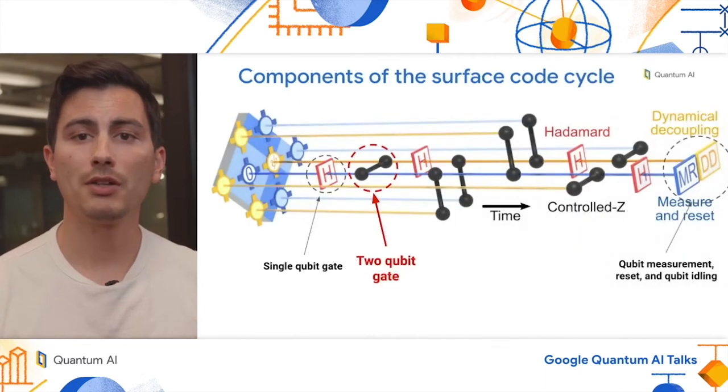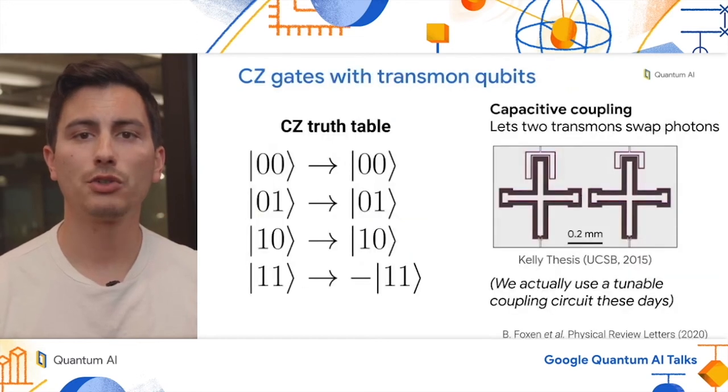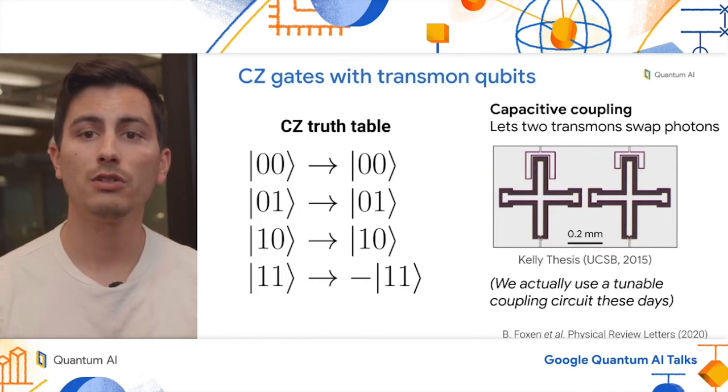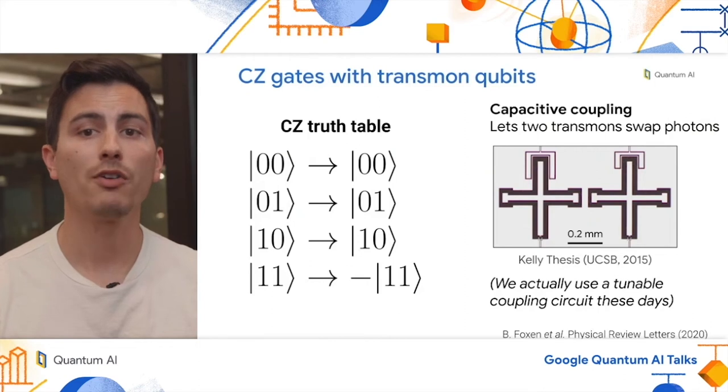Okay, now that I told you about single qubit gates, let's move on to two qubit gates. The two qubit gate of choice for us is the controlled Z or CZ gate. If you're not familiar with what a CZ gate does, I've shown you the truth table on the left hand side of this slide. The states 00, 01, and 10 all remain the same. However, the 11 state picks up a minus sign.